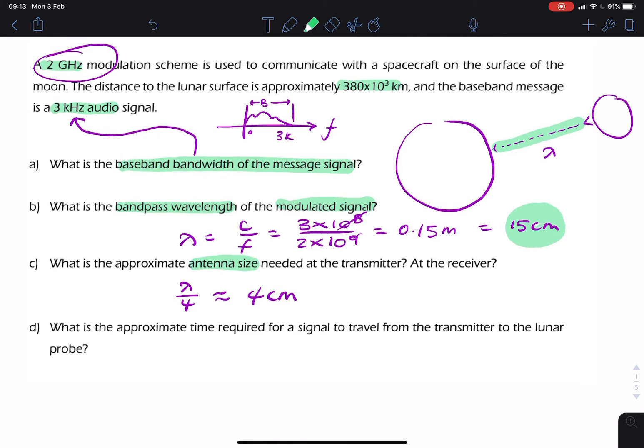Part D asks for the time required for a signal to travel from the transmitter all the way to the moon. So, what's the time required?